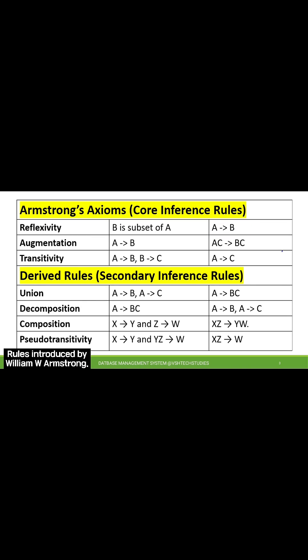All literals A, B, C, X, Y, W, Z — these are all attributes or column names in a table.